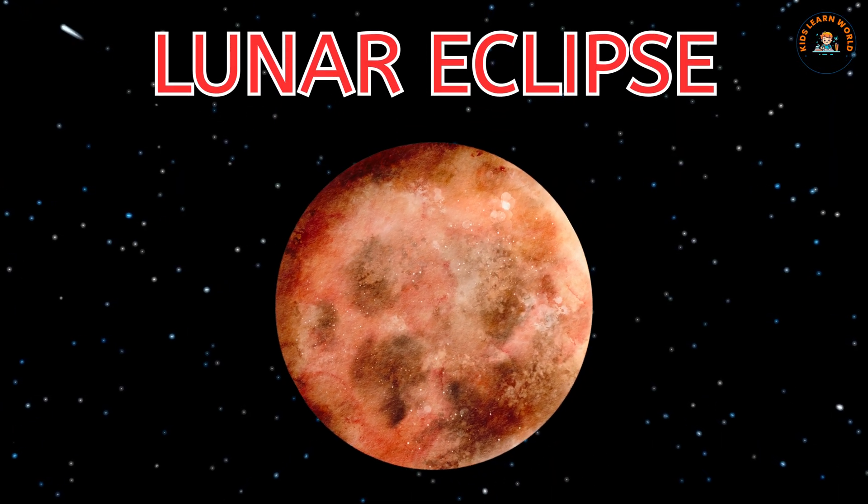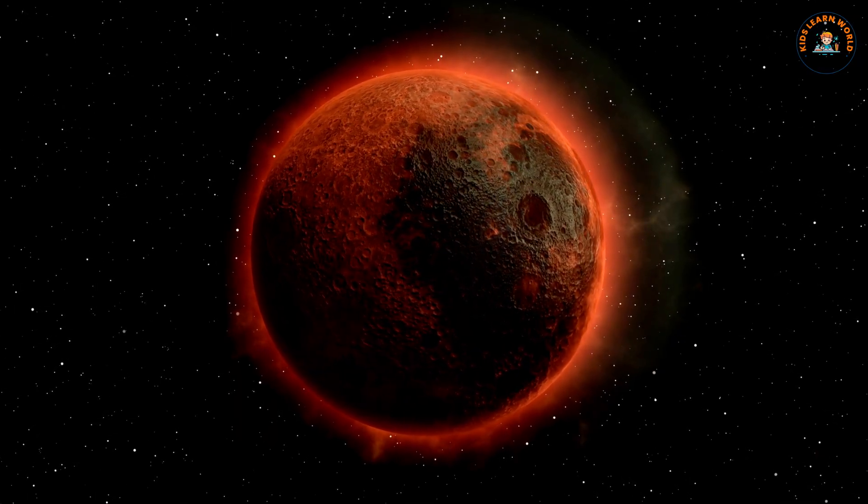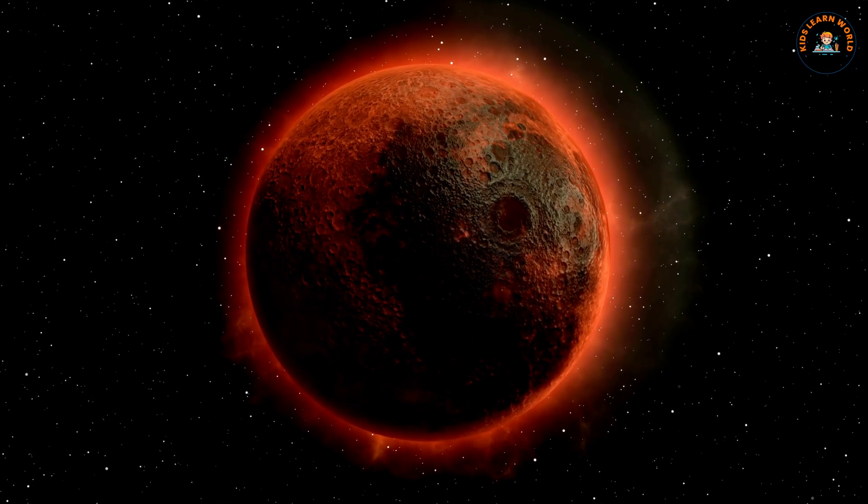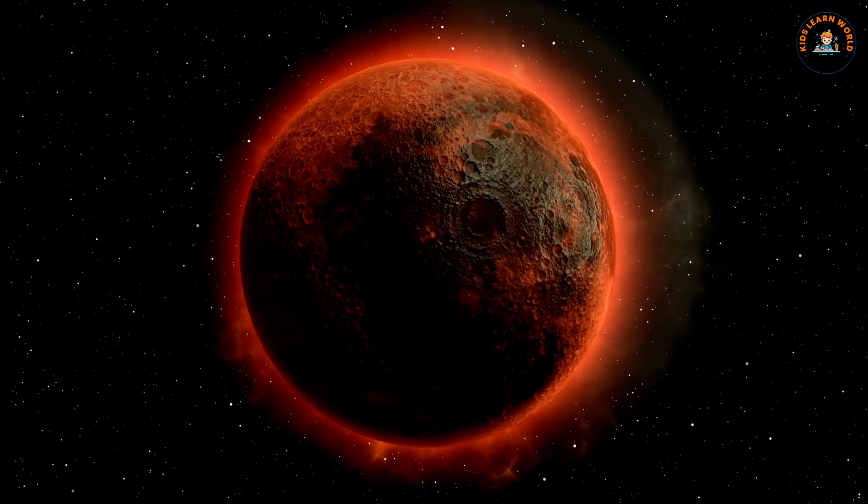This is a lunar eclipse. A lunar eclipse happens when Earth blocks sunlight from reaching the moon. The moon looks dark or red.